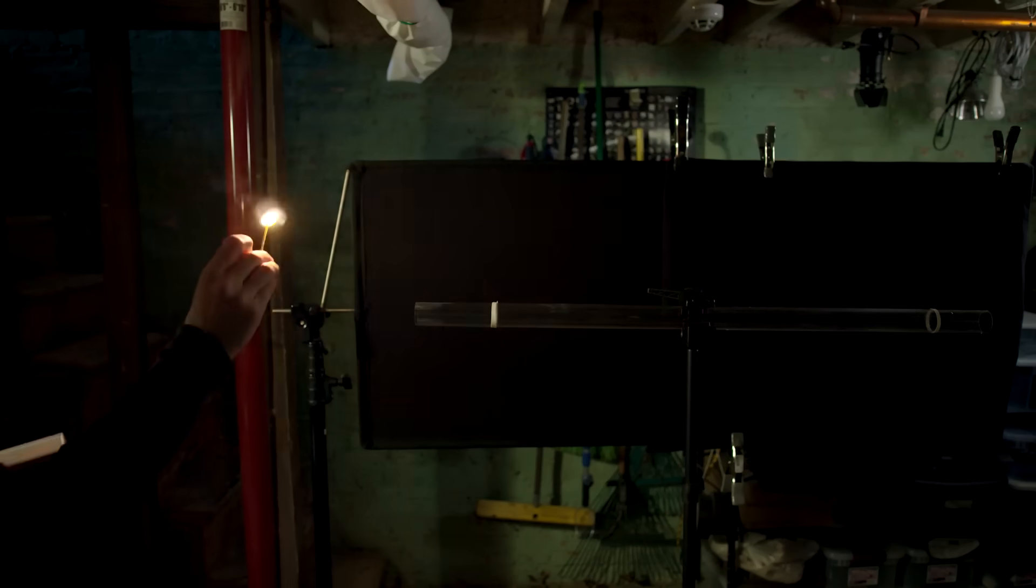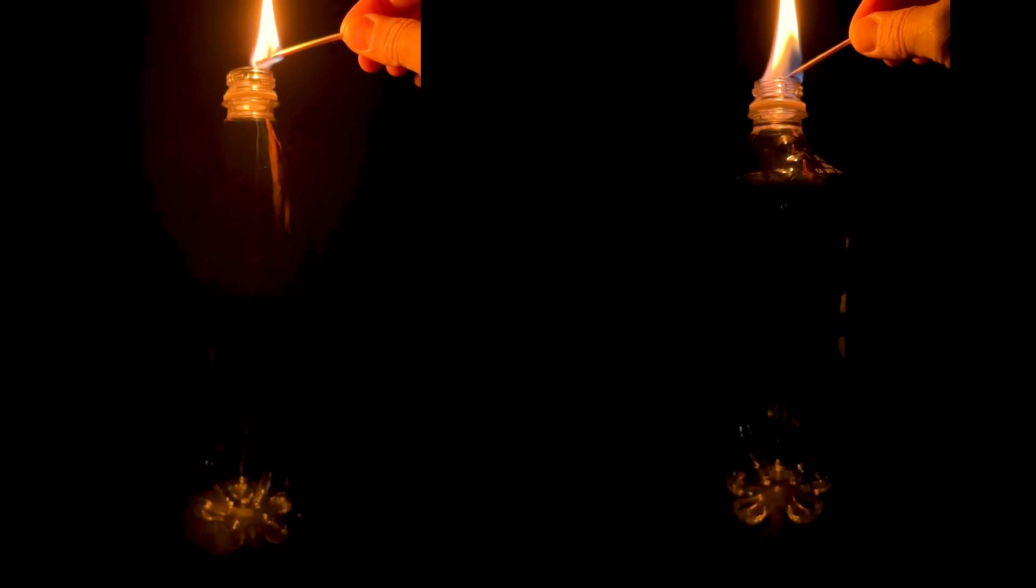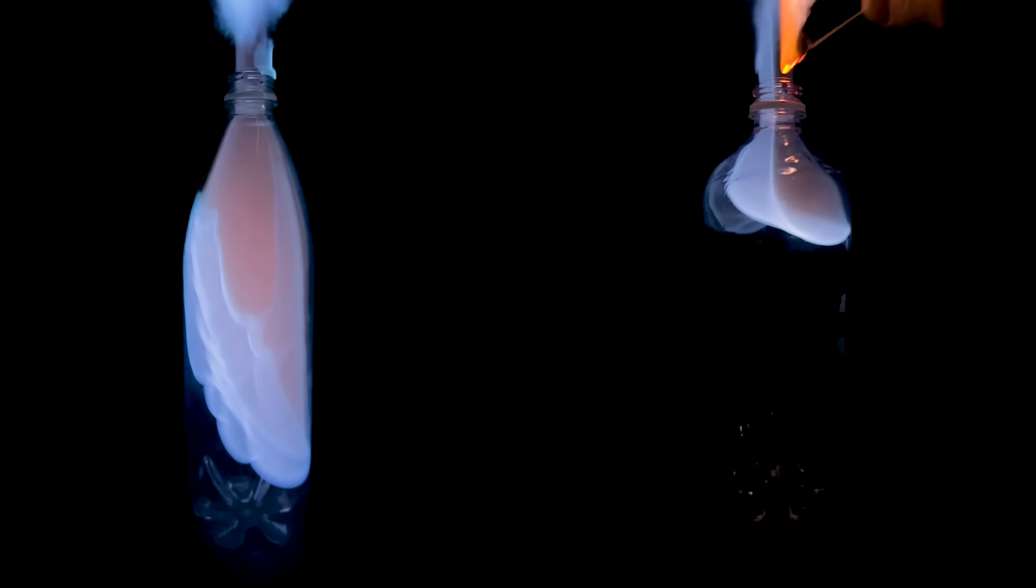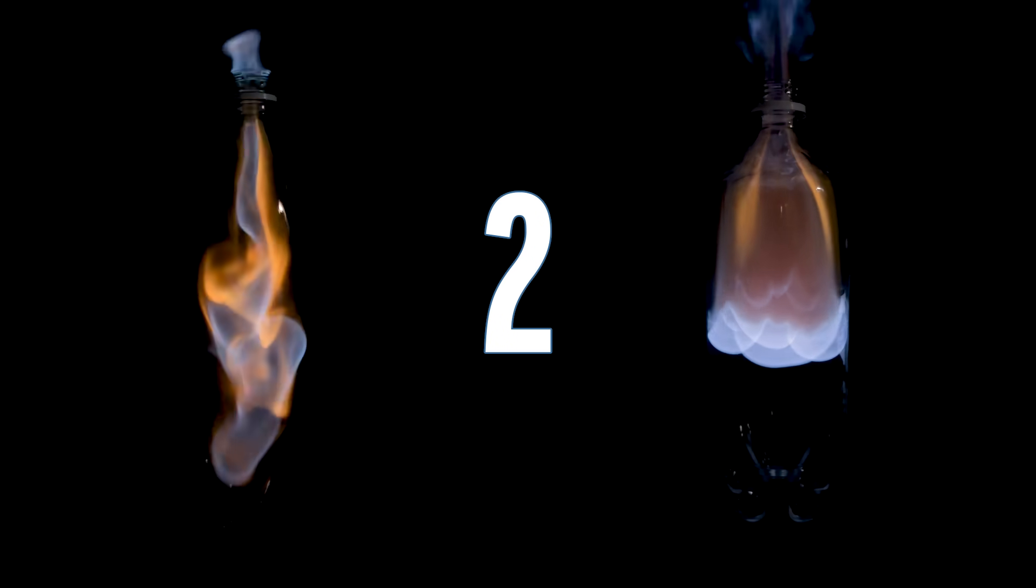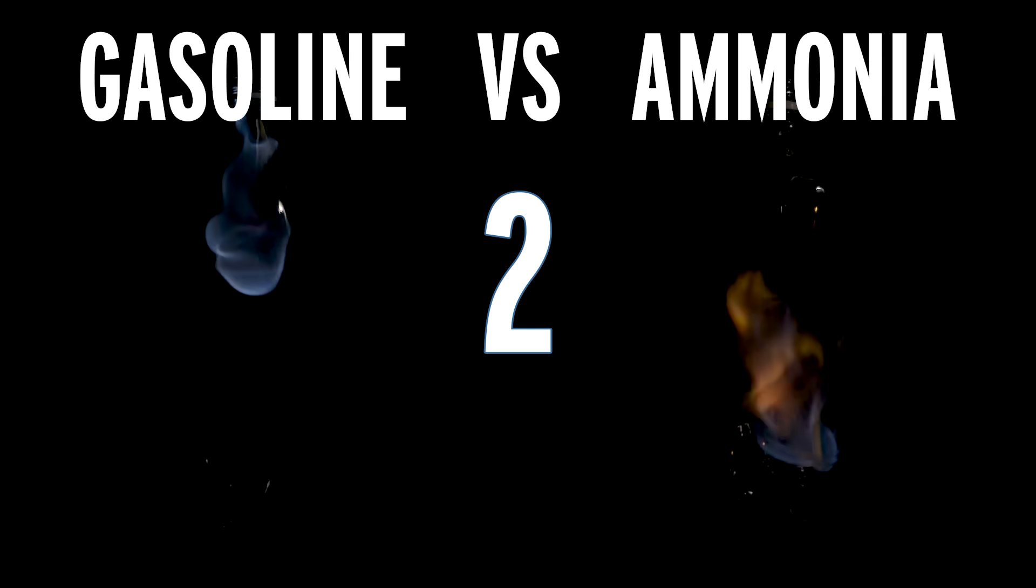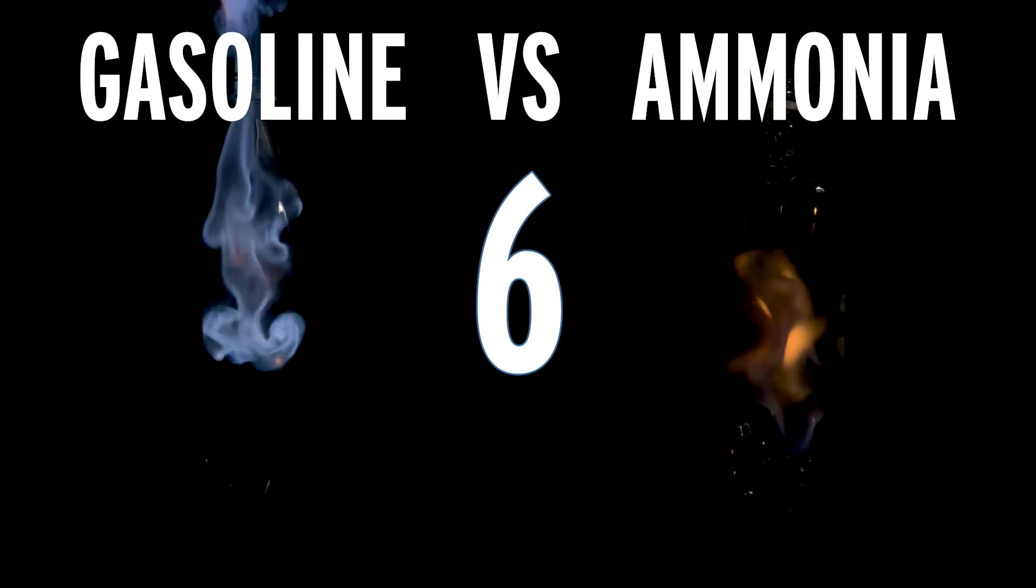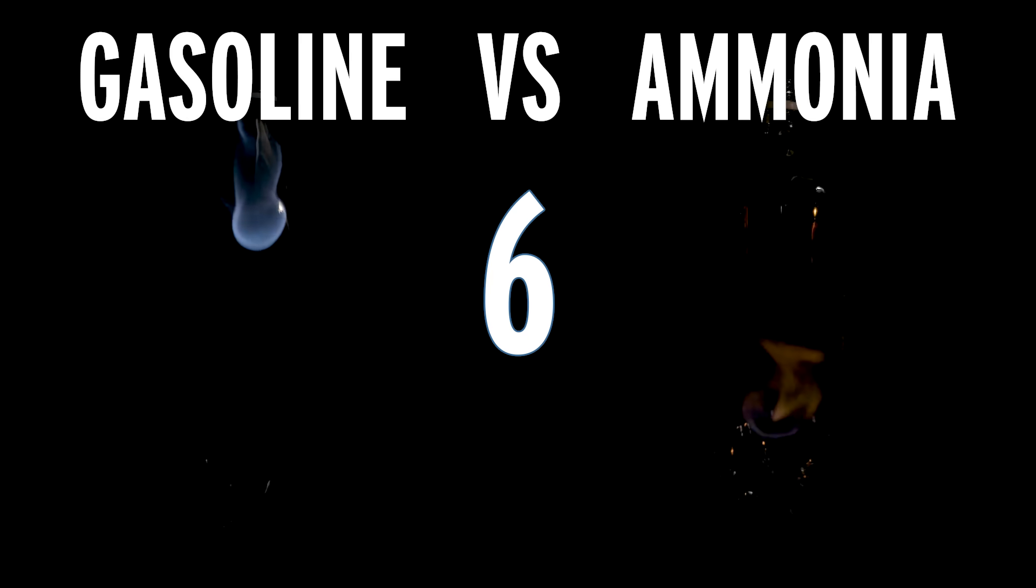This is 100% isopropanol, and its flame is traveling at 99 centimeters per second. The difference in the flame speed between these two concentrations is a factor of two. One is double the other. Now, the difference between gasoline and ammonia is a factor of six. In other words, gasoline's flame speed is six times as fast as ammonia's.